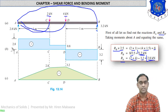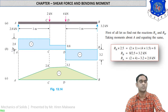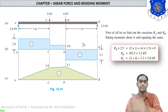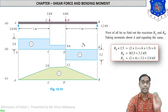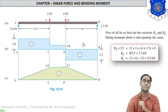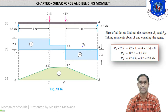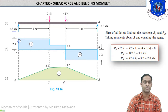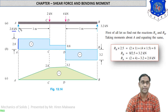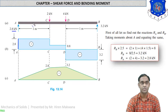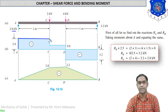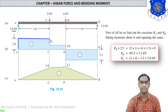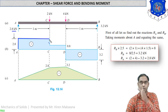Now we have to draw the shear force diagram. Start the shear force diagram from the left side — unlike cantilever beams where we start from the right. At point A there is a reaction of 2.8 kN going up, so draw a vertical line upward of 2.8. From A to C there is no load, so the horizontal line at 2.8 remains constant. At point C there is a 2 kN vertically downward load.